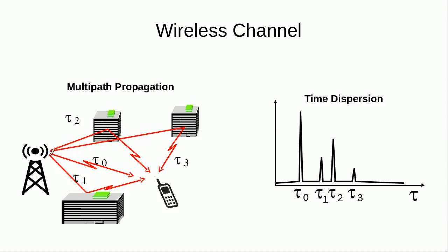So the same information would have multiple copies. For example, the same signal would reach this mobile through a path having a minimum delay of T0. And then there will be another copy of the same signal that would reach this mobile after a time delay of T1, because it is a longer path.